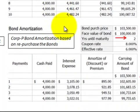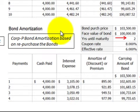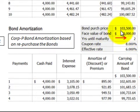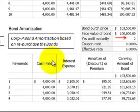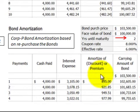Now moving down to Corporation P, the parent corporation — that's based on the repurchase of the bonds. They repurchased them with two years remaining on the bond, and they paid $103,500 for them. So they bought them back at a premium. Again, we have the amortization schedule for the cash payment, the interest expense, the amortization of the premium, and the carrying value.